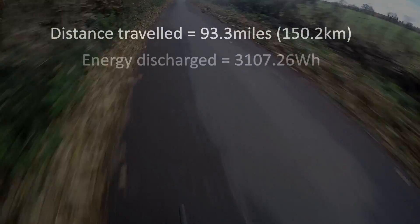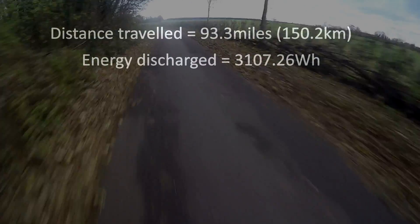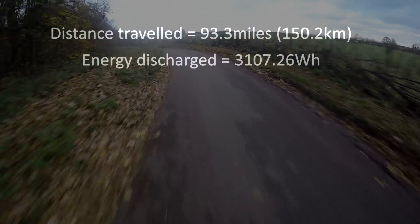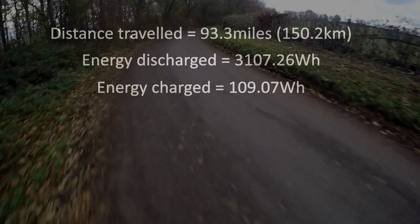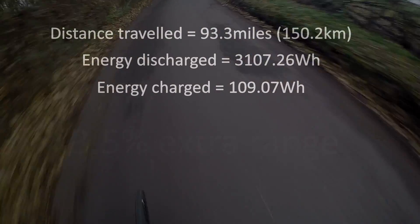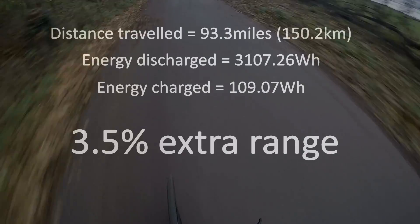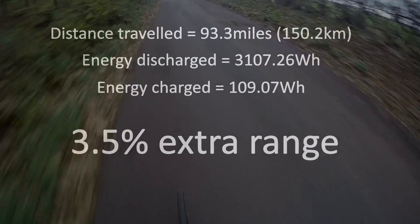Over the 93.3 miles travelled, the bike used 3107 watt hours and the amount of energy recharged from the regenerative braking was 109 watt hours. This gives a value of three and a half percent extra range with the regen braking. Now that might not sound like very much,